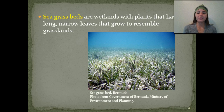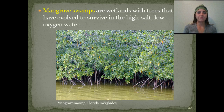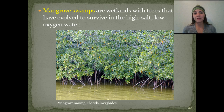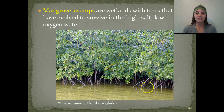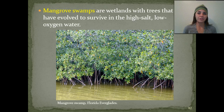Seagrass beds are wetlands with plants that have long, narrow leaves that grow to resemble grasslands. Mangrove swamps are wetlands with trees that have evolved to survive very high salt and very low oxygen water levels. You hear a lot about mangrove forests in Florida — these trees are very well adapted to high salt concentrations and low oxygen concentrations in the water.